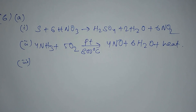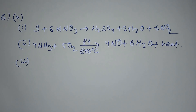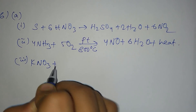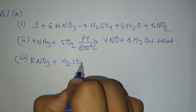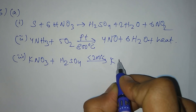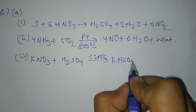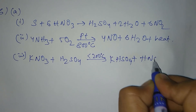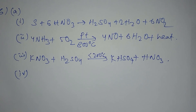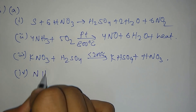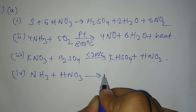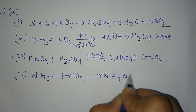Number 3 — laboratory preparation of nitric acid: a nitrate and sulfuric acid below 200°C gives metallic sulfate and nitric acid. Number 4 — reaction of ammonia with nitric acid: ammonia plus nitric acid gives NH4NO3.